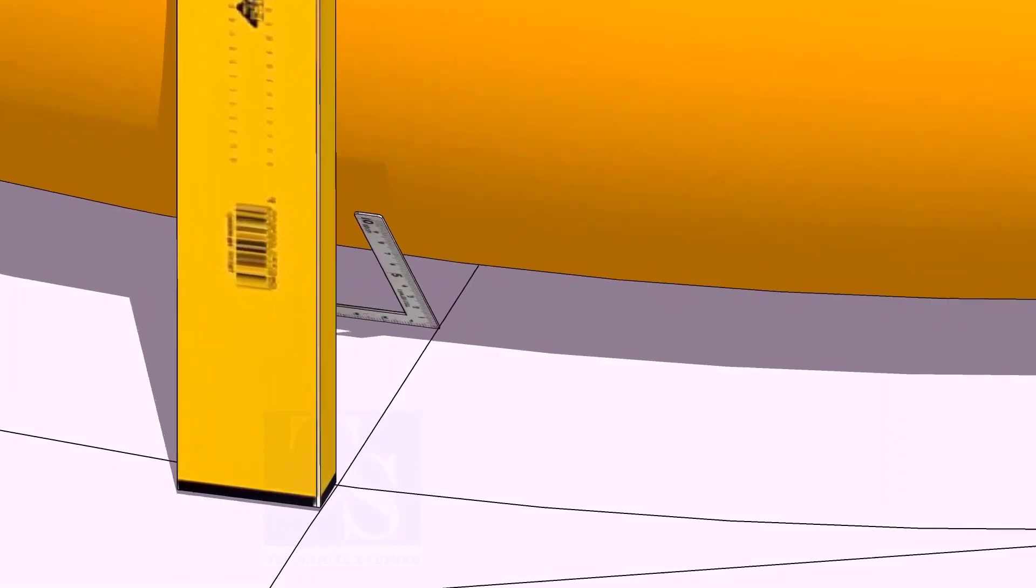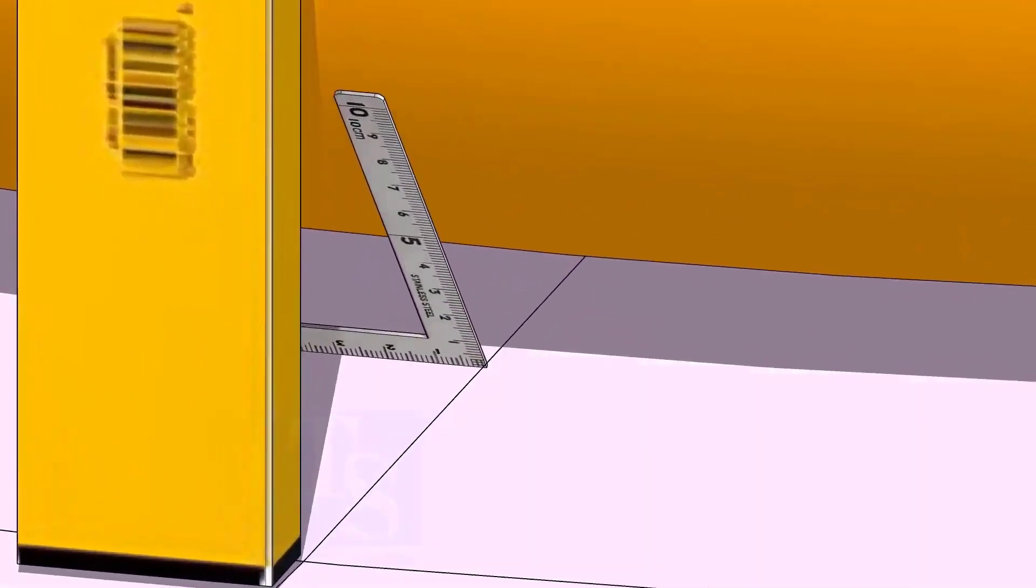At the bottom side, use a small right angle and transfer the line to the elbow on both sides.